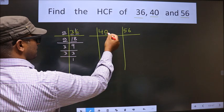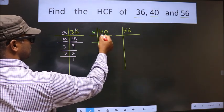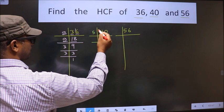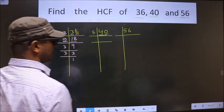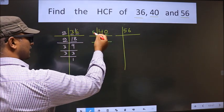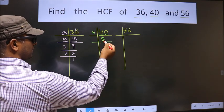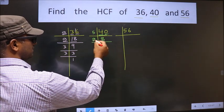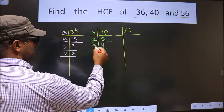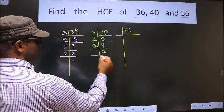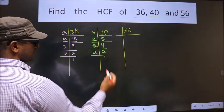For 40, the last digit is 0, so we take 5 here. The first number is 4, which is smaller than 5, so we take two digits: 40. 40 in the 5-table is 5×8=40. Now we have 8; 8 is 2 fours. 4 is 2 twos. Now 2 is a prime number, so we take 2: 2×1=2.